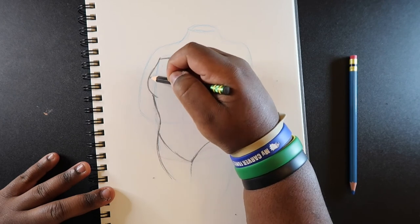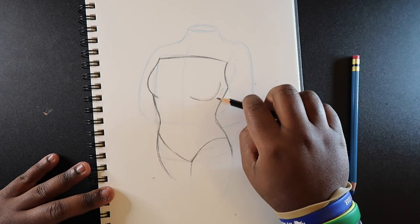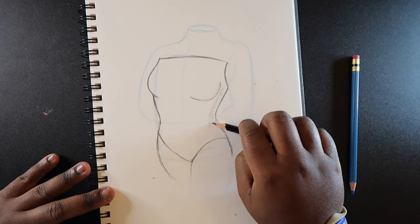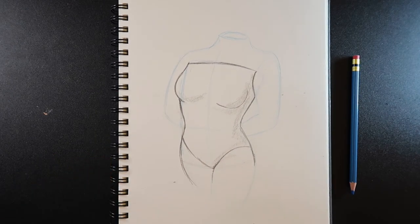So just doing that. And then holding my pencil on its side, I'm just going to apply some shading to it. And yeah, that's how you draw the female torso.